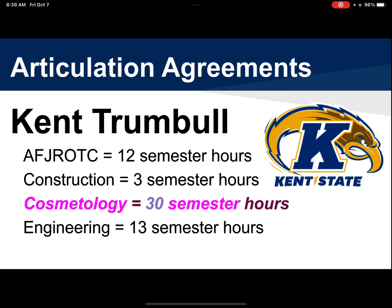I'd like to point out a few special cases. We have articulation agreements a lot with Kent State Trumbull. Air Force Junior ROTC — you can transfer 12 semester hours of credit, that's almost a full semester of credit towards some degrees at Kent Trumbull. Construction — you can take three semester hours with you to Kent State Trumbull. The big winner is cosmetology: you can transfer a block of 30 semester hours of college credit — that's a year's worth of college credit for free towards Kent State Trumbull in an Associates of Individual Study degree. Engineering also has almost a semester's worth of credit towards Kent Trumbull — 13 semester hours. Please factor those things in when you're looking at your schools.